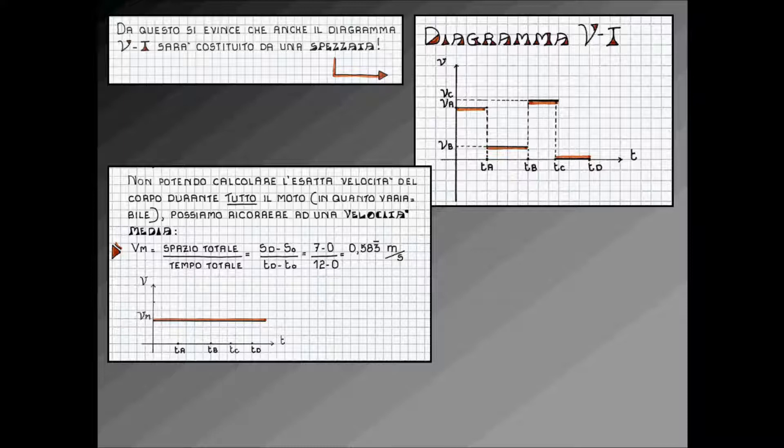Come ci mostra il diagramma sottoriportato, la velocità media così calcolata è una velocità inferiore alle velocità più alte e superiore alla velocità più basse che si sono avute nel corso del moto.